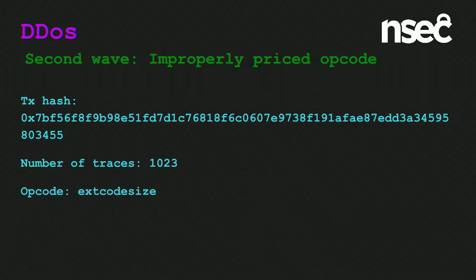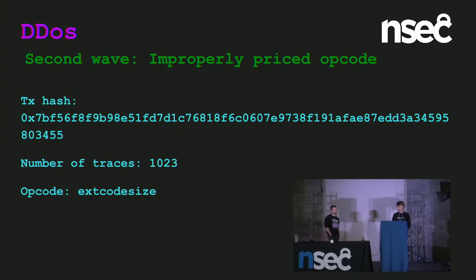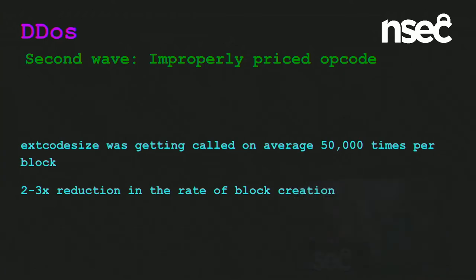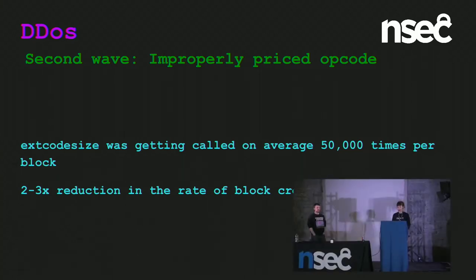What this transaction was doing was calling an opcode called EXTCODESIZE over and over. This opcode returns the size of the code held at an address — normally used to tell if an address is a contract or whether that contract has been destroyed. It involves fetching the code from disk on the client, which on optical drives can take quite a while. On average during this wave of the attack, EXTCODESIZE was getting called 50,000 times per block, resulting in a two to three times slowdown in the rate of block creation. Initially this opcode was priced at 20 gas; once everything was recalibrated, it went up to 700.